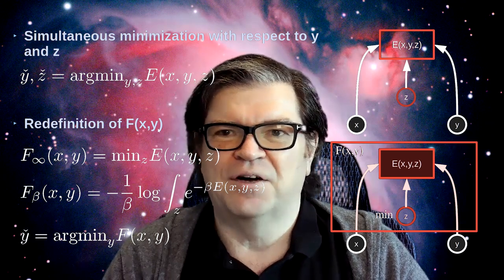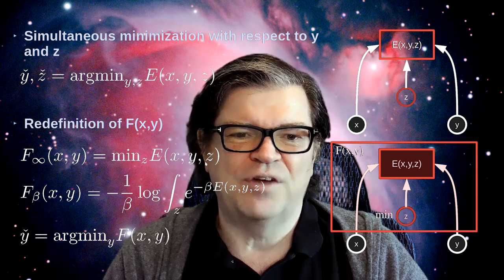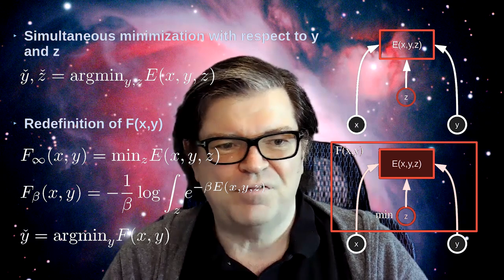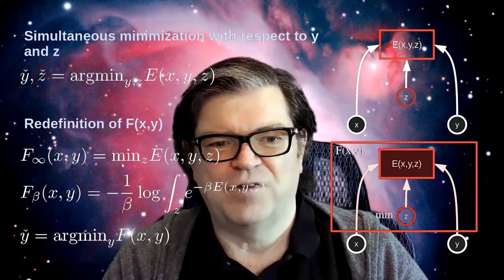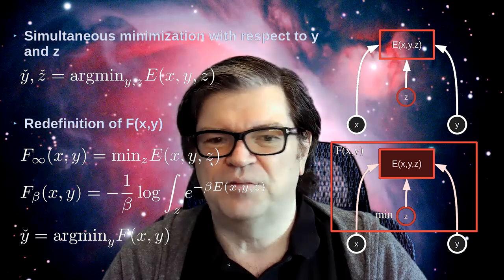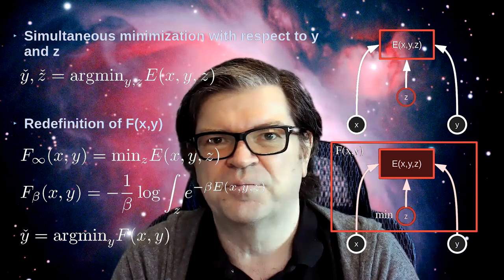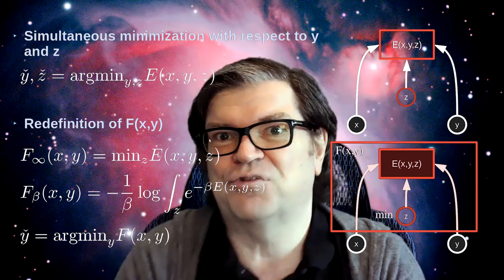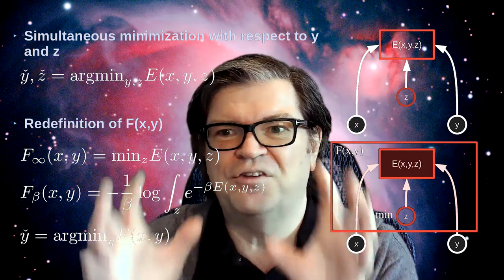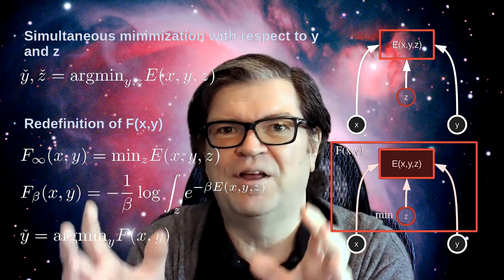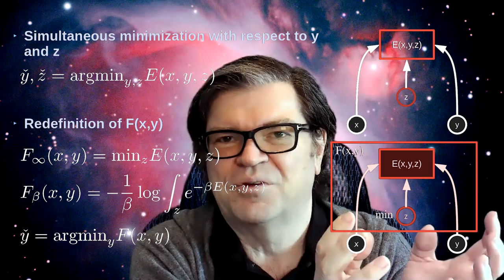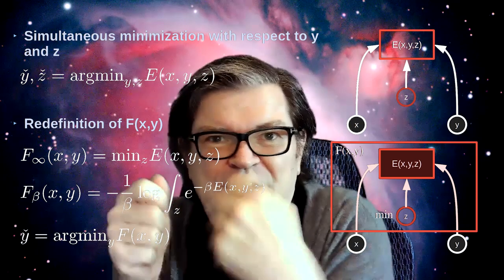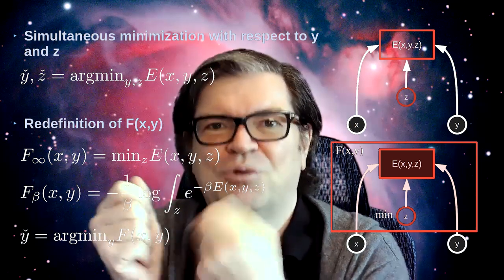Define F of X, Y as a form of E of X, Y, Z where I've eliminated Z. There's F-infinity of X, Y defined as the minimum over Z of E of X, Y, Z — given X and Y, you minimize with respect to Z and that's a function of X and Y. Physicists call this a free energy. There is another way: for one pair of X, Y there could be multiple Z's that give very low energy. Perhaps we should give a lower energy to a pair of X, Y if there are many different Z's that give low energy — multiple values of Z conspire to lower the overall energy.